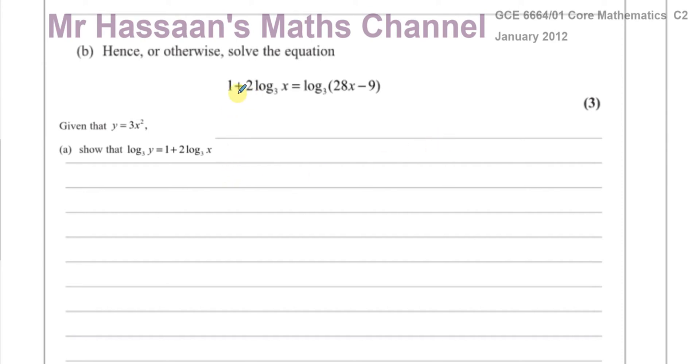So I'm going to show you the hence way first, and then I'll show you the otherwise way, just so that you can see that you could do it even if you didn't spot this pattern. But basically, if you look at what we've been given to solve, and we look at what we solved earlier, we can see that you've got 1 plus 2 log to the base 3 of x. And here you've also got 1 plus 2 log to the base 3 of x. So we can see that that is equal to log to the base 3 of y. So let me just replace this with log to the base 3 of y.